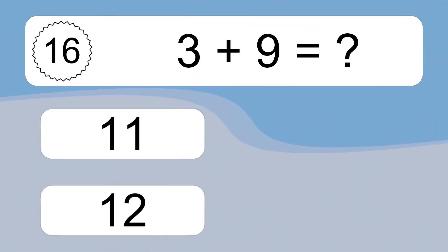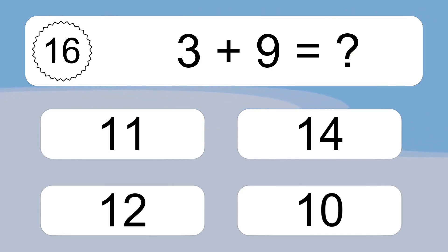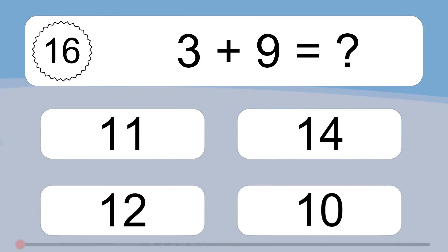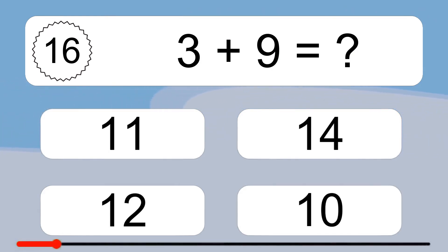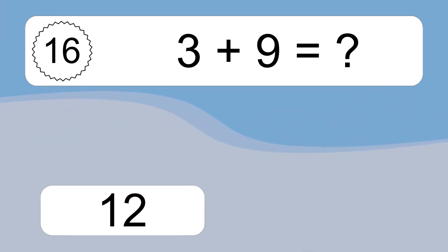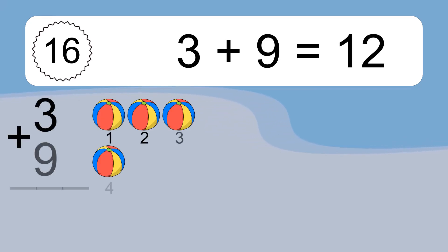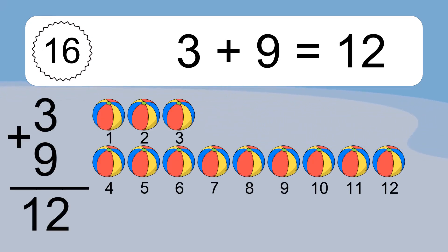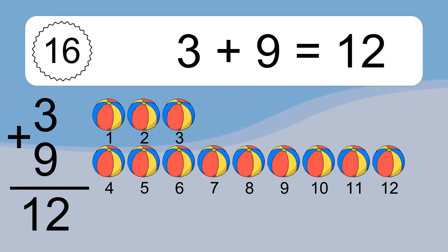3 plus 9 equals what? 3 plus 9 equals 12. Let's count it. 1, 2, 3, 4, 5, 6, 7, 8, 9, 10, 11, 12.